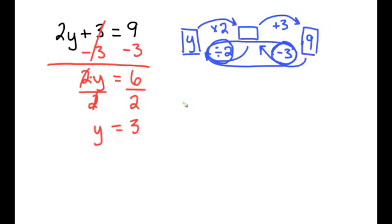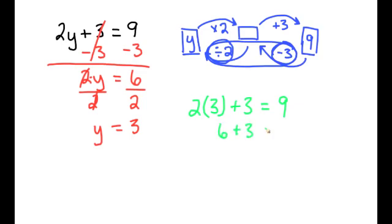Let's check the claim. We substitute in the three: two times three plus three equals nine. Following order of operations, two times three is six, plus three equals nine, and six plus three is nine, which in fact equals nine. So yes, we have shown that three is the solution to 2y + 3 = 9.